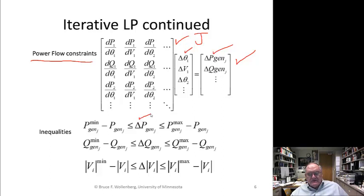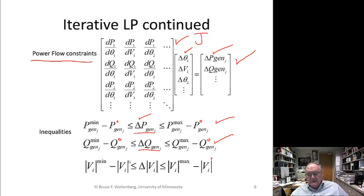The delta pgen — if you have the initial solution, it should have the little 0 on it. Same thing with the Q's. I can limit the excursion or the delta depending on the min and max, making those inequality constraints. Same thing for the voltage constraints.